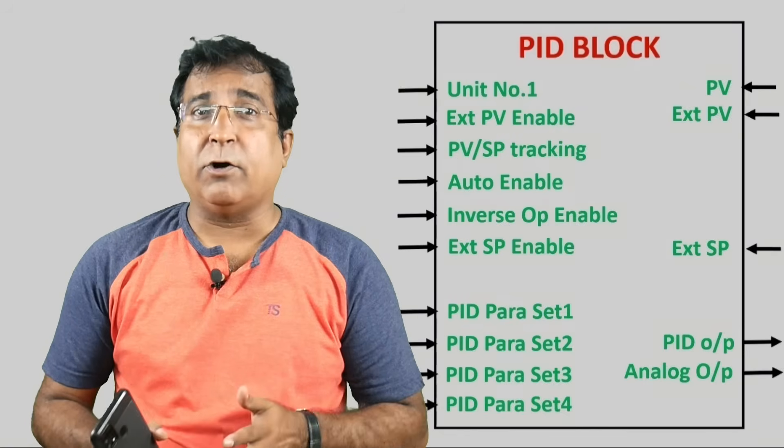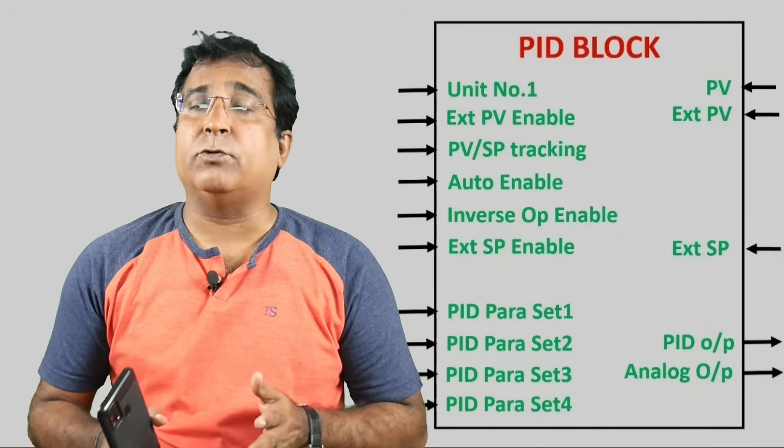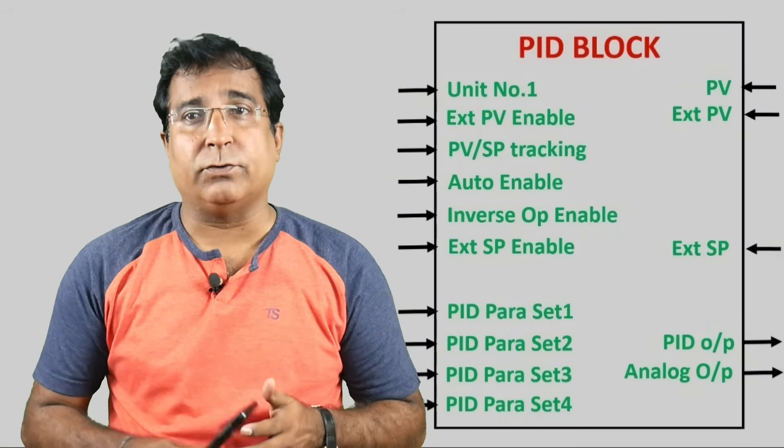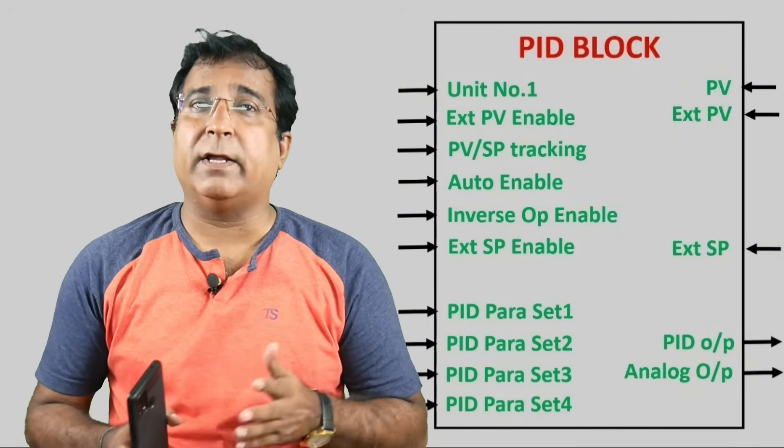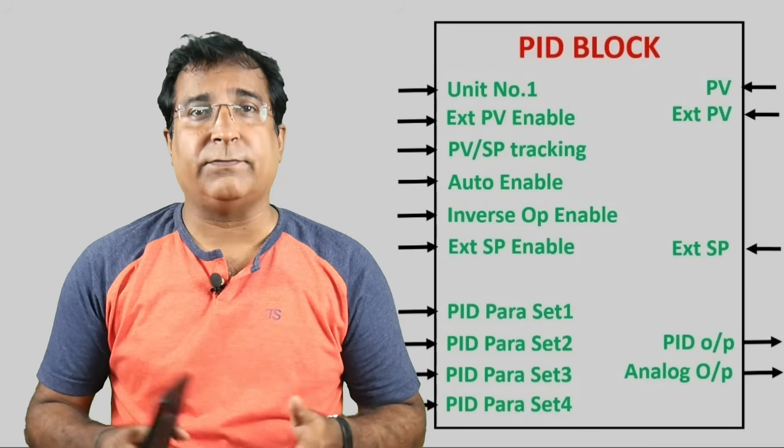Controlled output. This is the output of the controller which is to be connected to analog output channel to give you a 4 to 20 milliamp output to drive any control valve, VFD or any other final control element.